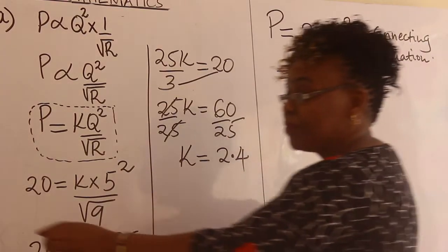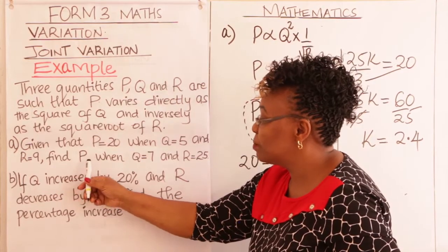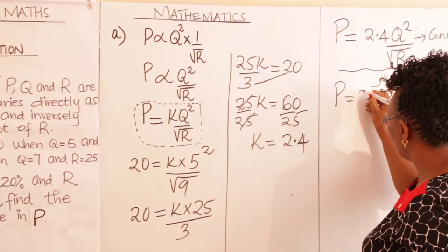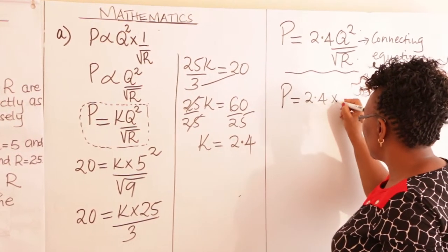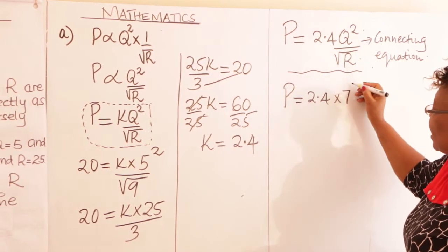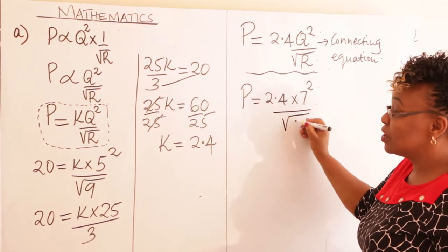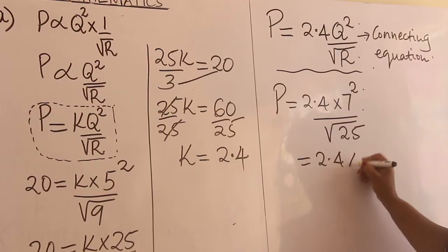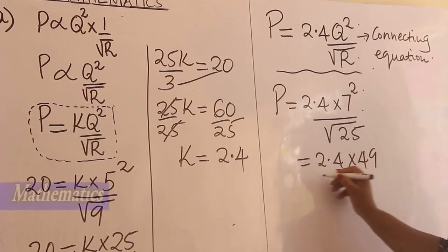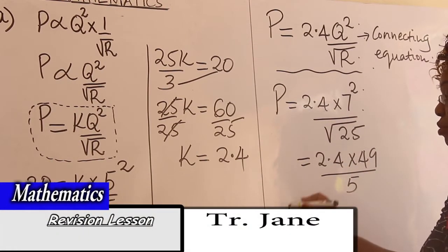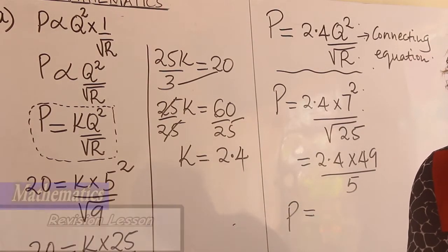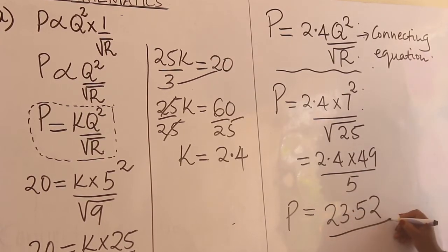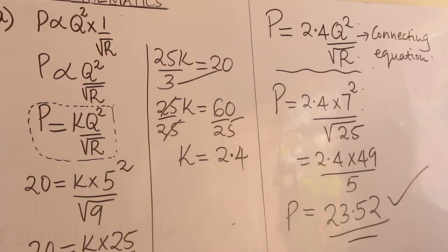After getting the connecting equation, you are told: find P when Q is 7 and R is 25. So substitute: P = 2.4 × 7² over square root of 25 = 2.4 × 49 divided by 5. Using a calculator, you get P = 23.52. That should be the answer.